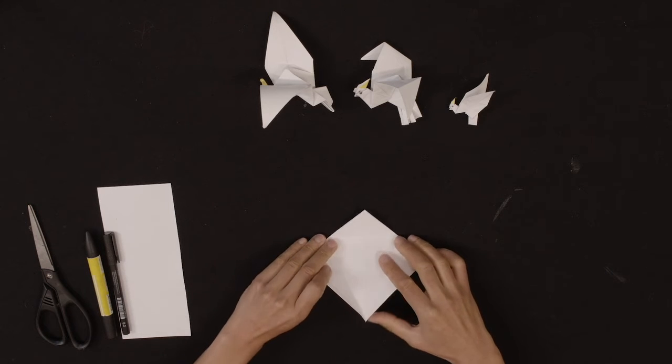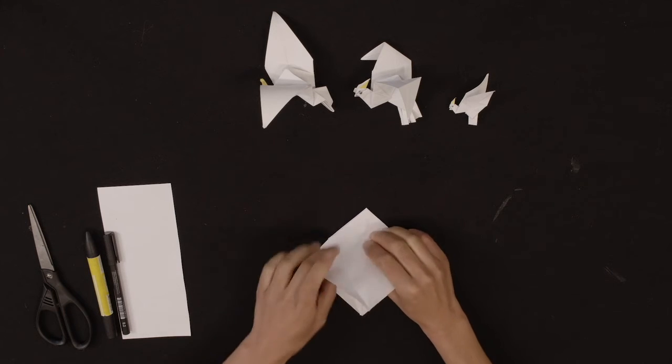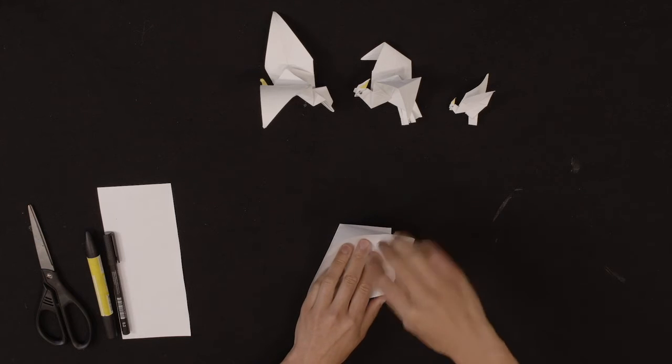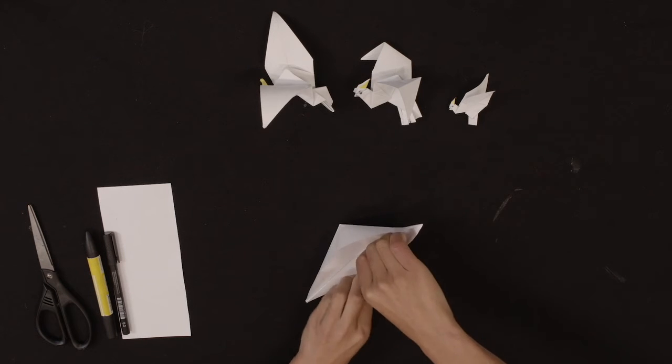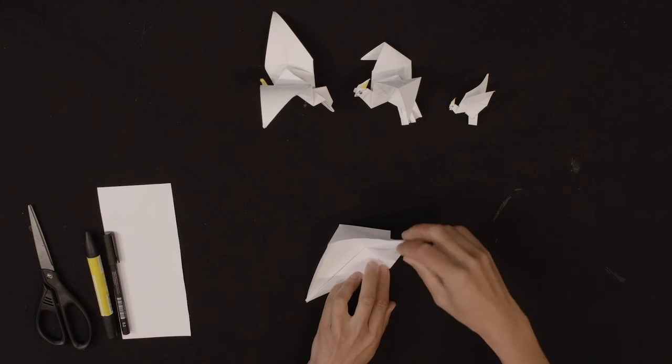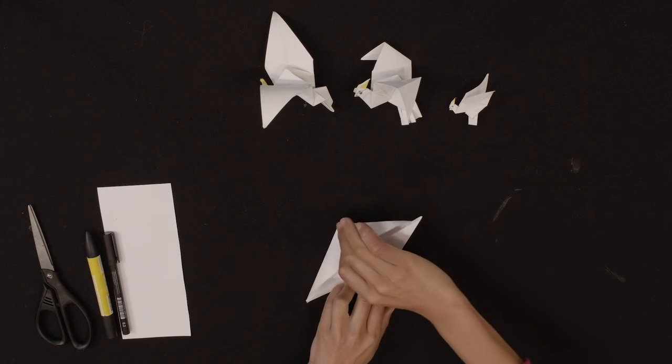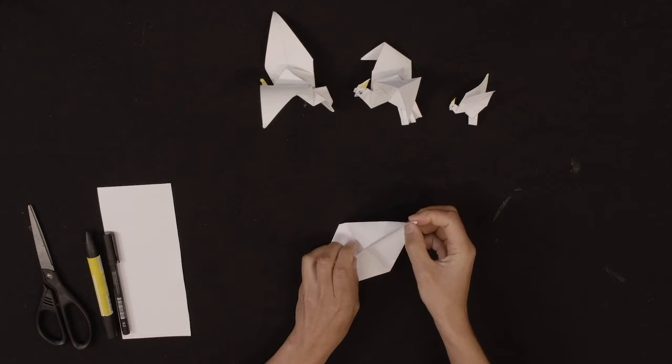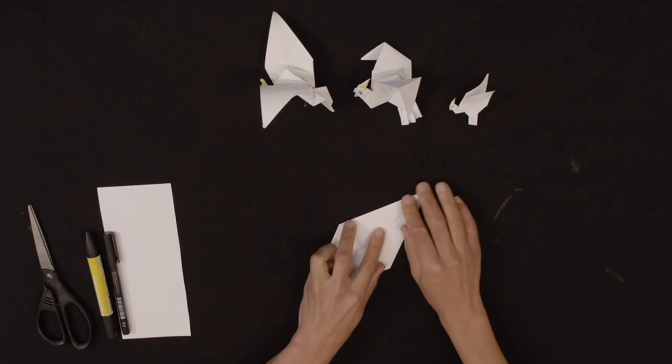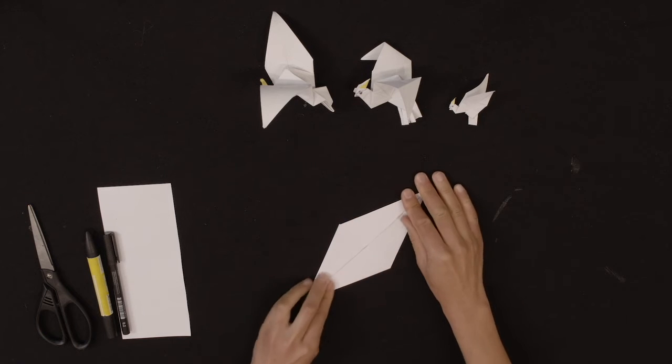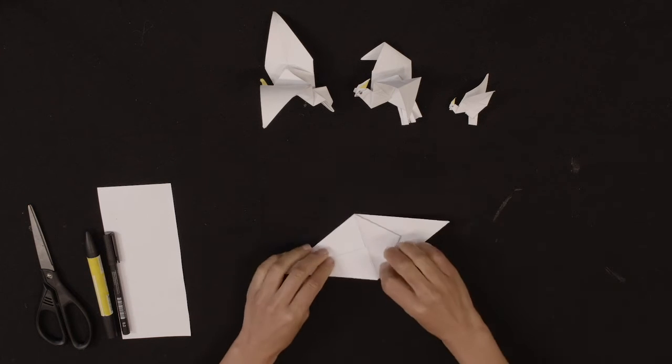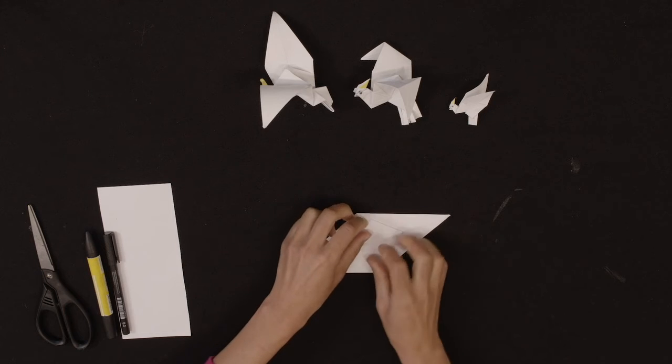And then you're going to open up the triangles, open it all the way up. And we're going to fold to create a diamond. So you're going to pull in all the edges so it lines up in the center. You're just going over the crease that you'd already created before.